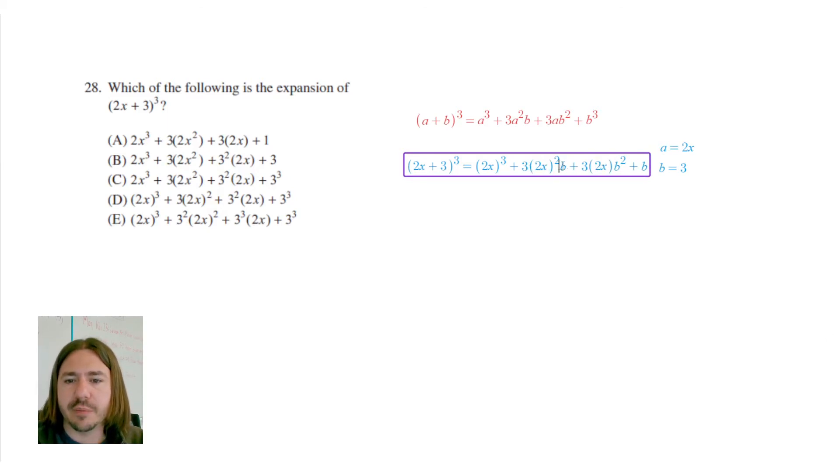and also this a over here with 2x. Then I'm going to replace all the b's with 3. So this is going to be times 3, and this is going to be times 3 squared. And then finally, we've got this plus b cubed. So that would be plus 3 cubed.